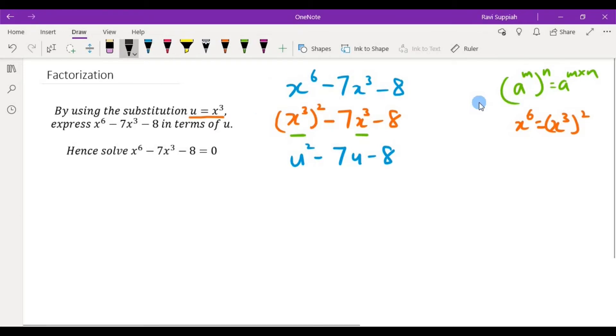So in order to factorize this, x to the power of 6 minus 7x cubed minus 8 equals 0 can actually now be rewritten as u squared minus 7u minus 8 equals 0. Now we can factorize this using the cross or box method, whichever approach that you feel comfortable with.